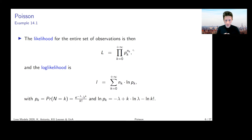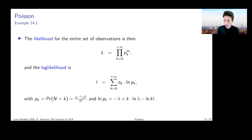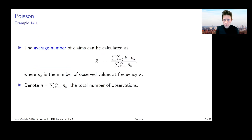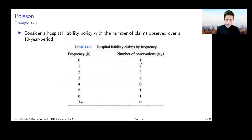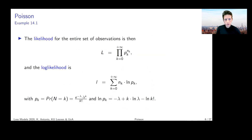We need to raise that probability to the power n_k, the number of times we observed that particular outcome. The essential idea is that we build the likelihood by assuming independence across observations, and for each observation we ask: under the assumed frequency distribution, what was the probability of observing that particular outcome? Switching to the log-likelihood, we return to a sum over k of n_k times the logarithm of p_k.